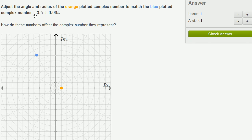And so the real part of this number is negative 3.5, and we've plotted that on the real axis, negative 1, negative 2, negative 3.5. And then the imaginary part is 6.06.